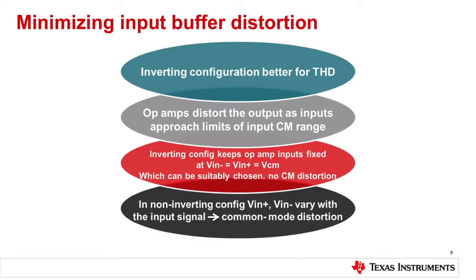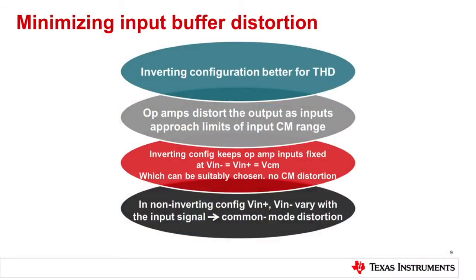We need to also minimize the input buffer distortion. Generally speaking, you want to go with the inverting configuration, which is better for THD. Op-amps distort the output as inputs approach the limits of the input common mode range. Inverting configurations keep the op-amp inputs fixed — V+ equals V- by action of negative feedback — which equals your common mode, suitable when there's no common mode distortion. In a non-inverting configuration, V+ and V- vary with the input signal, giving you common mode distortion that may affect your circuit tremendously.